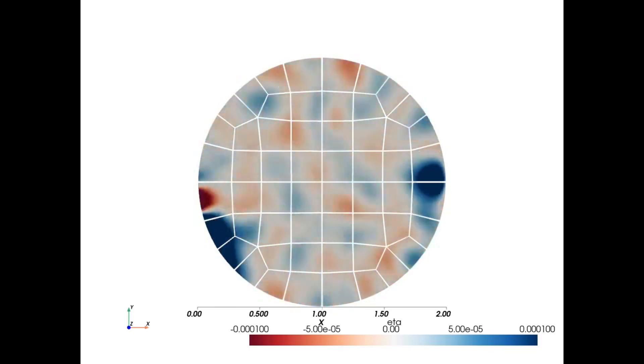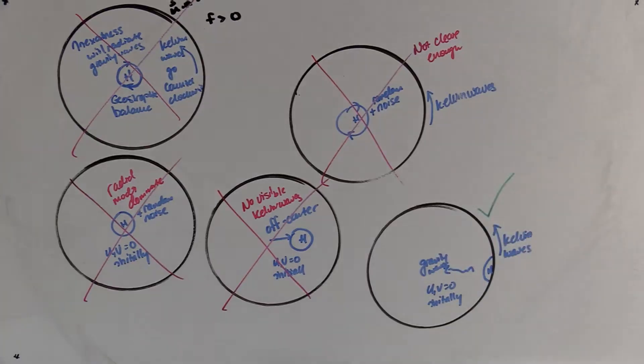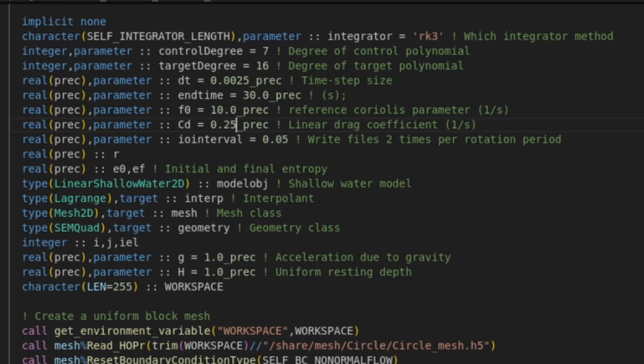Now, to really clean things up, we'll add a little bit of linear drag to the solution so those initial disturbances damp themselves out over time, and we get a much clearer picture of our Kelvin wave.